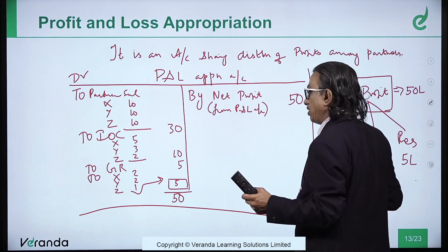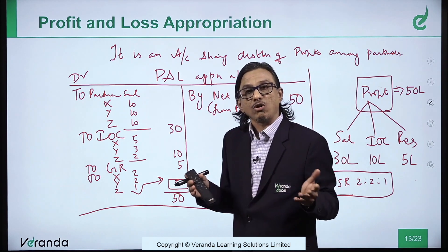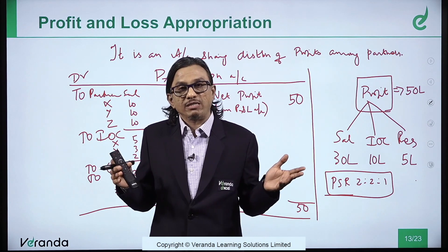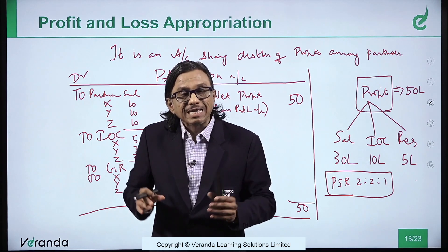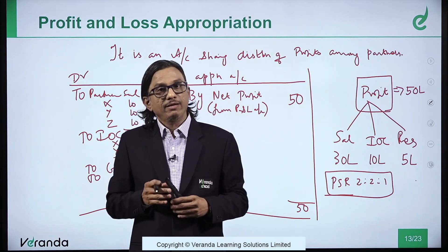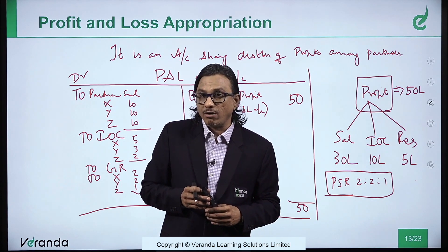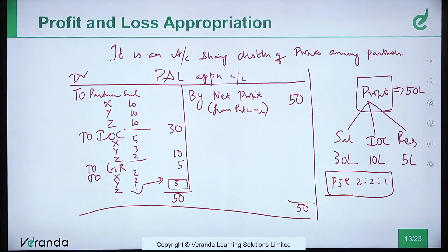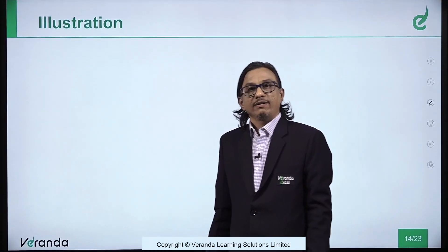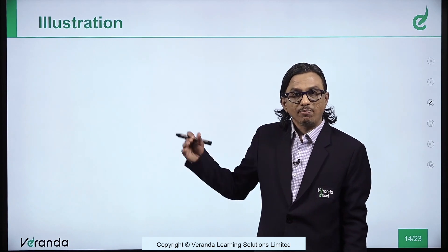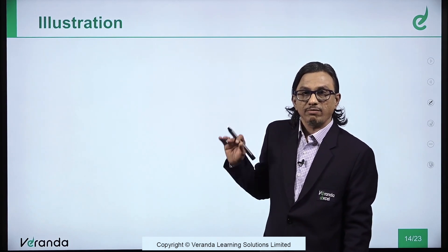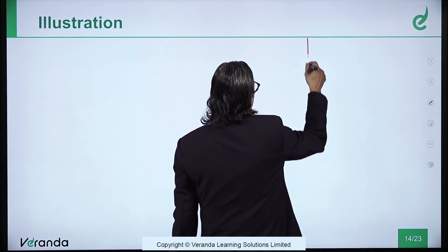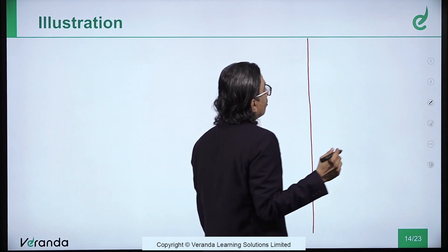These things have to be shown clearly in a P&L appropriation account. I hope you have understood how to prepare a P&L appropriation account. Now we will see an example. The question is: Net profit equals 3,40,000 for a particular year. Salary as per deed — there are two partners A and B — A gets 10,000 per month, B gets 5,000 per month.